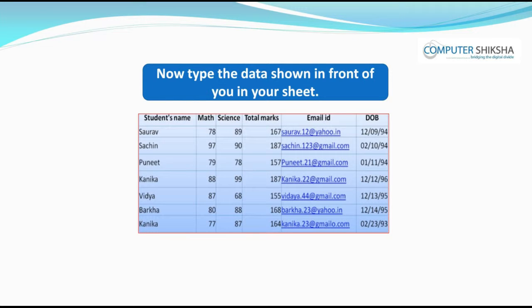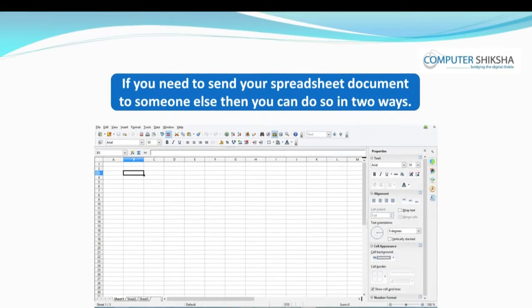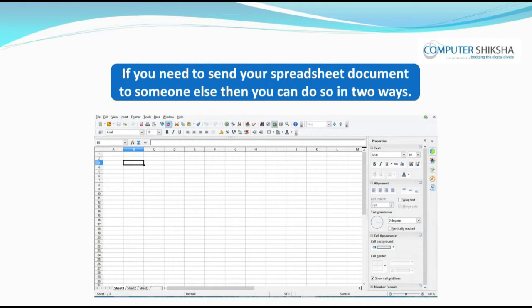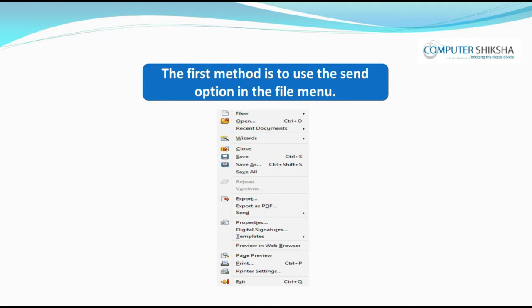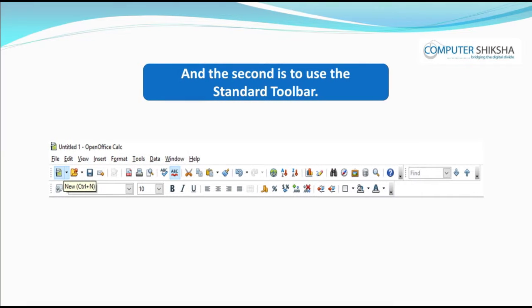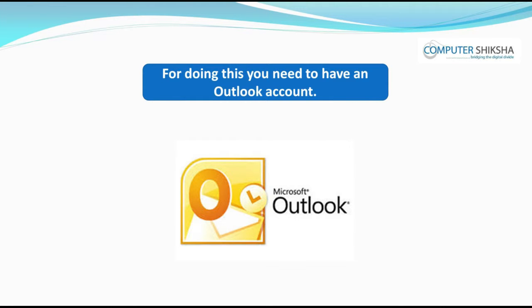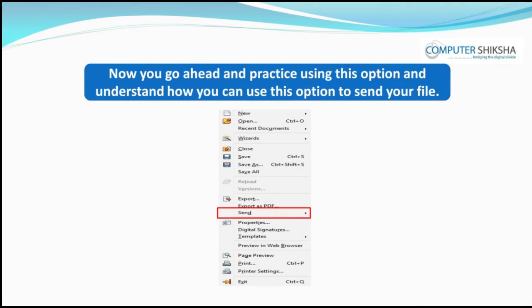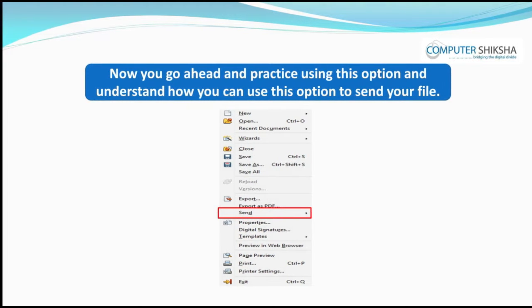Type the data shown in front of you in your sheet. Can you tell, if you need to send your spreadsheet document to someone else, how will you do so? If you need to send your spreadsheet document to someone else, you can do so in two ways. The first method is to use the Send option in the File menu, and the second is to use the standard toolbar. For doing this, you need to have an Outlook account. Now, all of you go ahead and practice using this option to send your file.